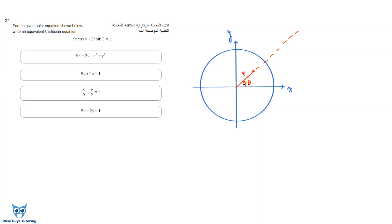This is an important point: to give polar coordinates you need to provide both the distance and the angle. If I only gave you the angle, you wouldn't know where along that line I am. If I only told you the distance r, it could be in any direction. You need both the angle and the distance.